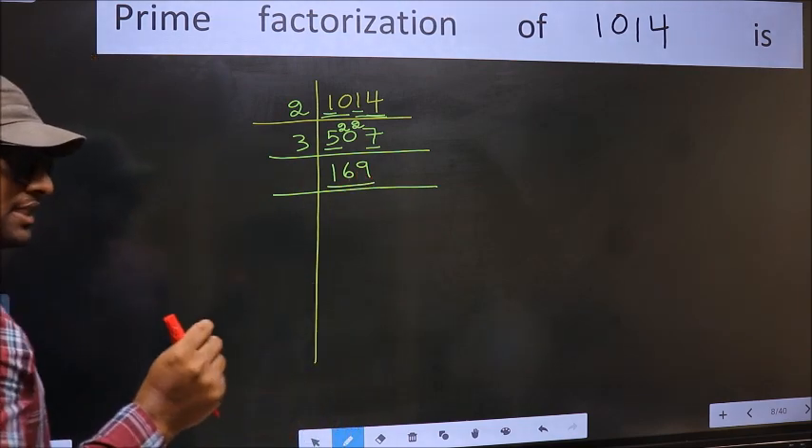Now here we have 169. Always remember, 13 square is 169. 13 into 13, 169. That is, 13 times 13 is 169. Now here we have 13. 13 is a prime number, so 13 once 13. So we got 1 here. So the prime factorization of 1014 is the product of these numbers.